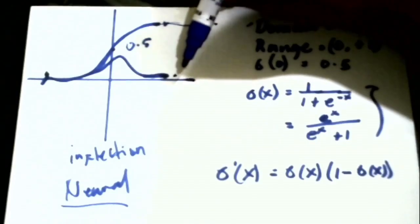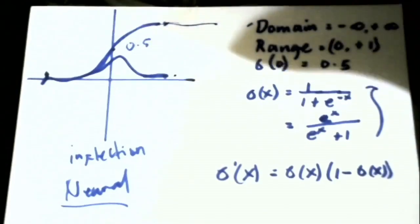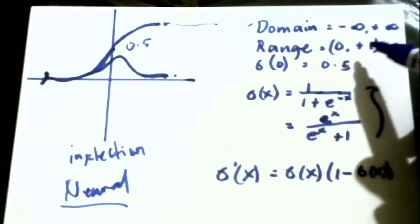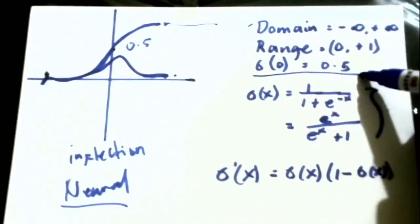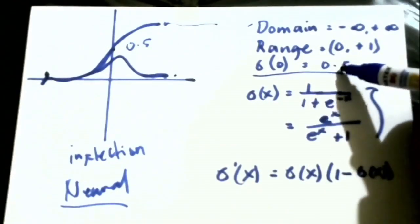So there is no such thing as zero in this case. So the range would always be between zero and one and as what I've said the inflection would happen at 0.5.